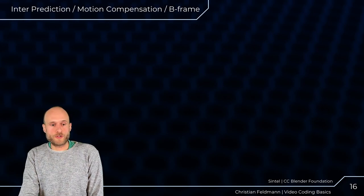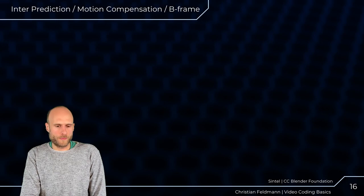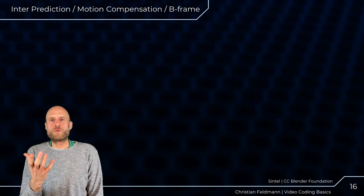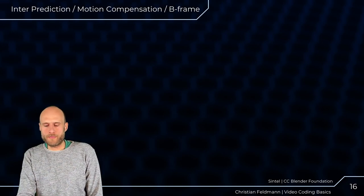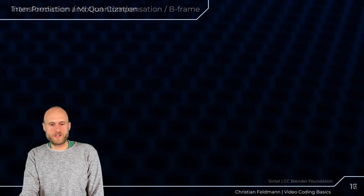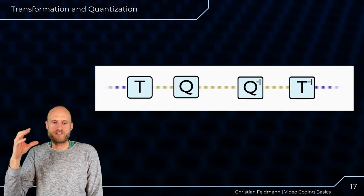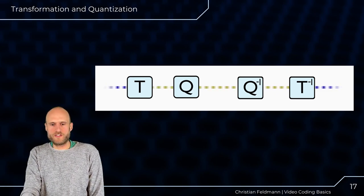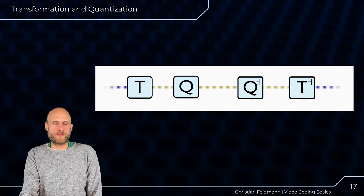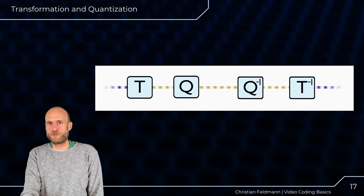After forming a prediction, we subtract it from the original block to get an error signal — describing how wrong the prediction was. This error signal then undergoes a transform, then quantization, then the inverse. Encoding error coefficients directly in the spatial domain is inefficient, so we apply a DCT (Discrete Cosine Transform) or Discrete Sine Transform to move into the frequency domain. These transforms have very nice decorrelation properties, removing much of the correlation between pixels.